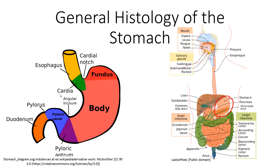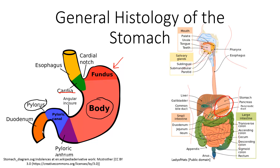We have the cardia or cardiac region — that is the region where the esophagus meets the stomach. We have the fundus, which is the superior distention of the stomach, and other organs also have a superior hump called a fundus. The main part of the stomach is called the body. Then we have the two parts of the pylorus: the pyloric antrum and pyloric canal, which is simply where it narrows down as it meets the proximal-most portion of the small intestine.